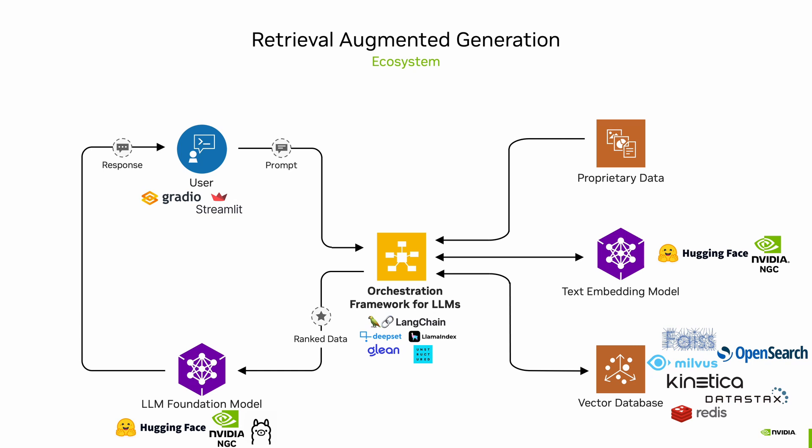Similarly, for vector databases we have FAISS, Milvus, OpenSearch, and Redis. For foundation models, we can use models hosted by different services such as HuggingFace, NVIDIA, and Ollama. For the user interface, there are frameworks such as Gradio and Streamlit that one can capitalize on. Again, these are just a few frameworks — there are many other tools out there that one can leverage.